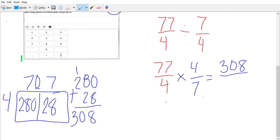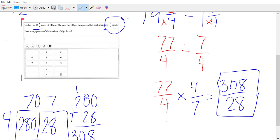And our denominator, 4 times 7 is simply 28. So how many pieces of ribbon does she have? She has 308 over 28 pieces of ribbon. So that fraction does not really help our answer at all, even though mathematically it's correct.